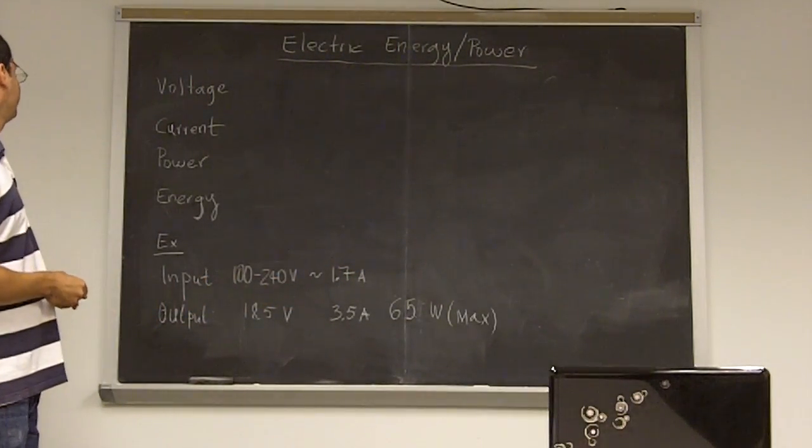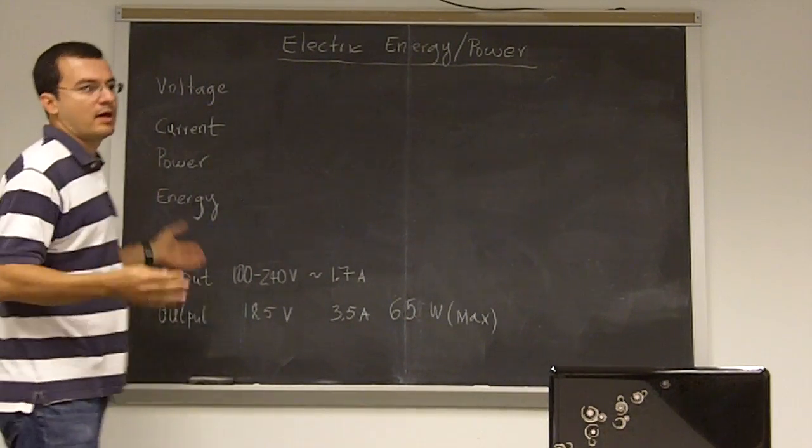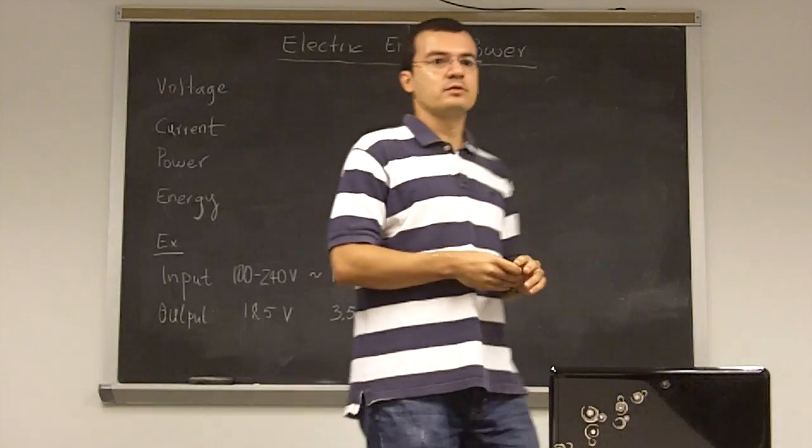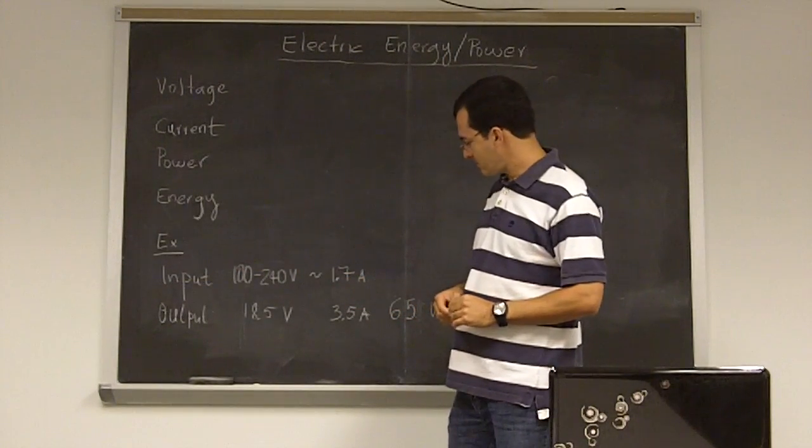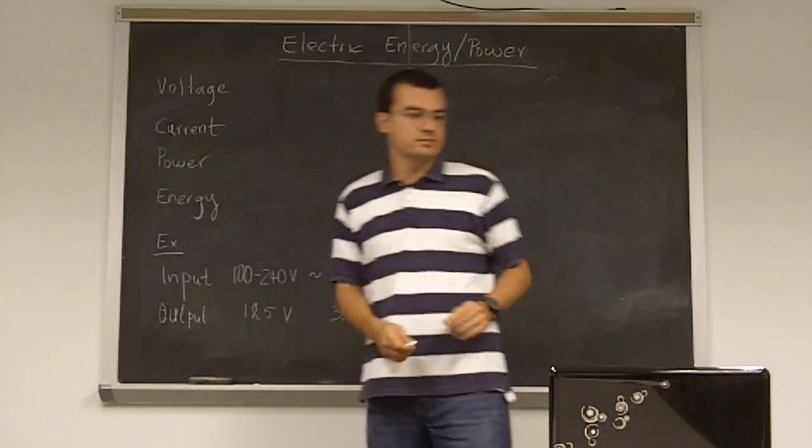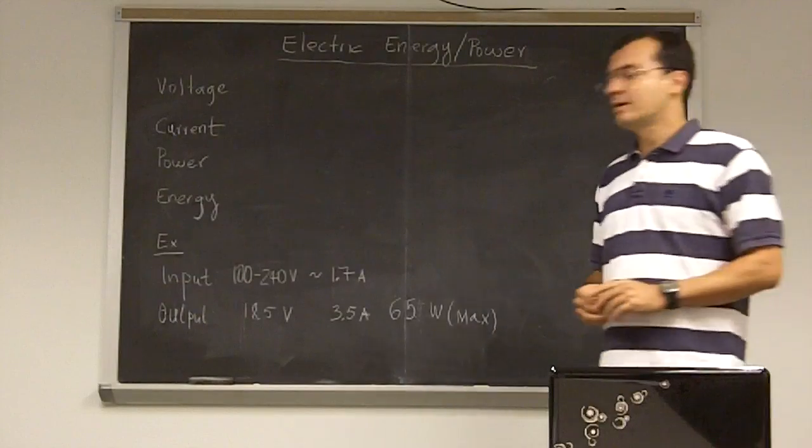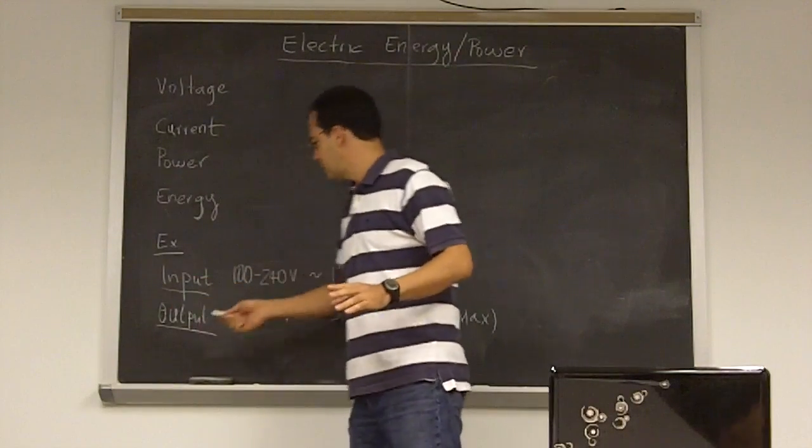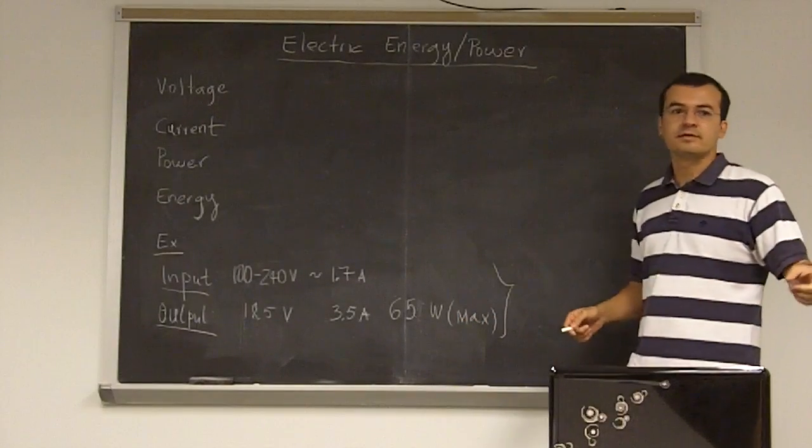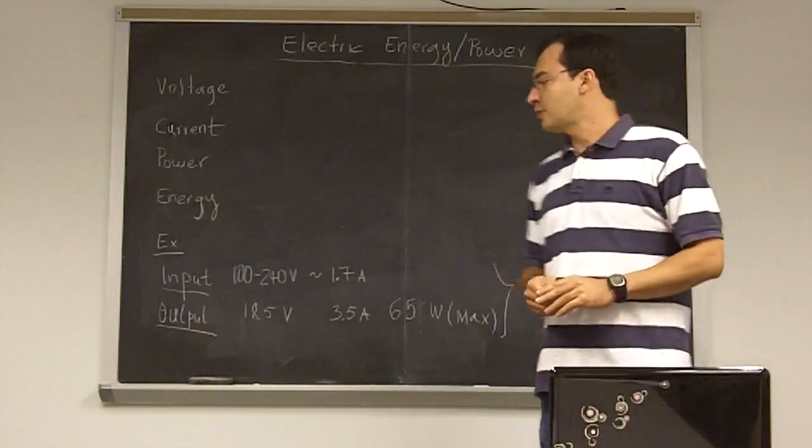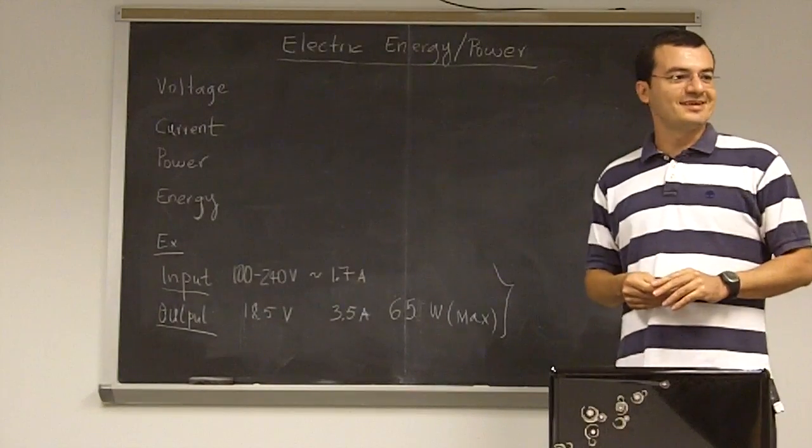So last class we talked about four basic electric magnitudes: voltage, current, power, and energy. I just mentioned those. We talked a little bit about voltage and we got an example using my battery charger of my computer, which is here today and Andy gave me these values. He read these from the nameplate in the battery charger. So I gave you some homework. I don't know if you did it but let's continue.